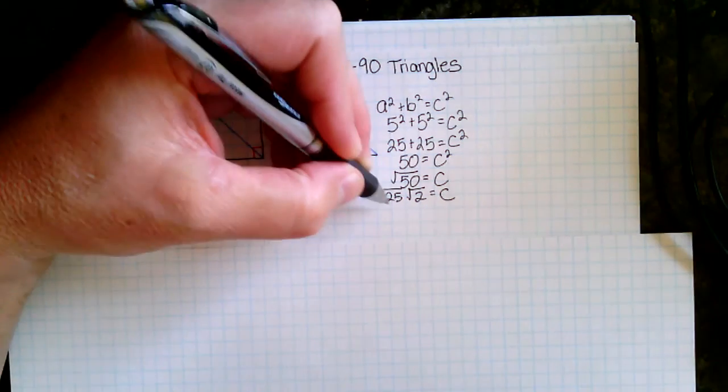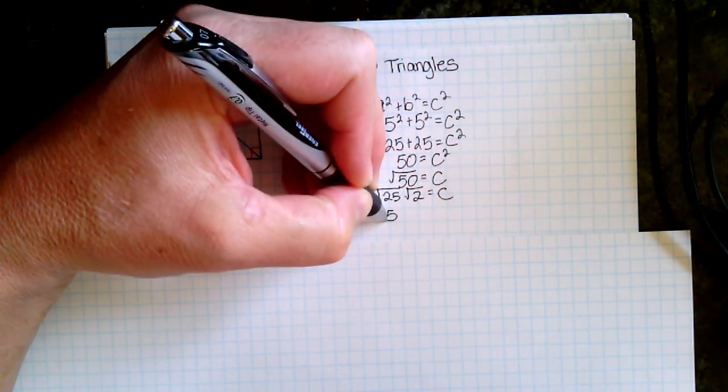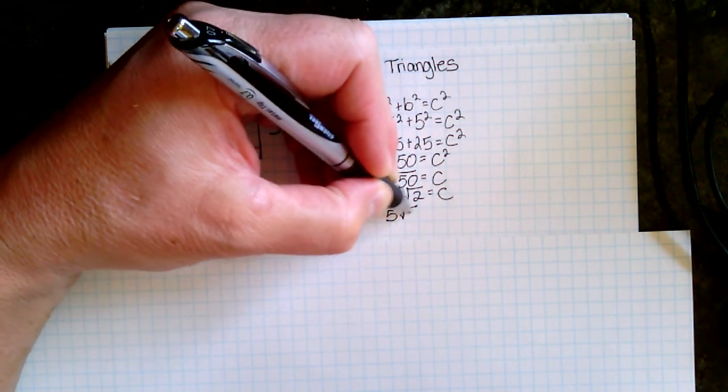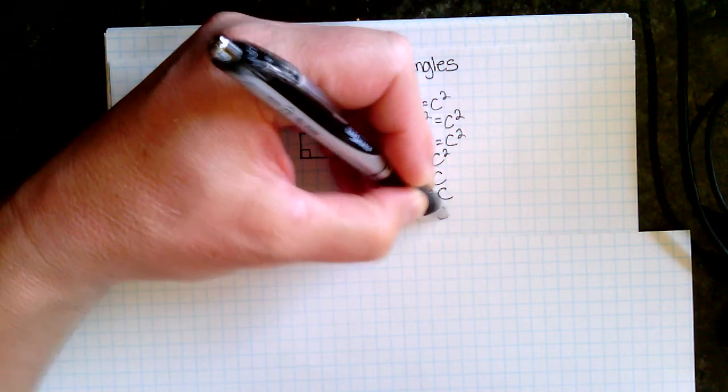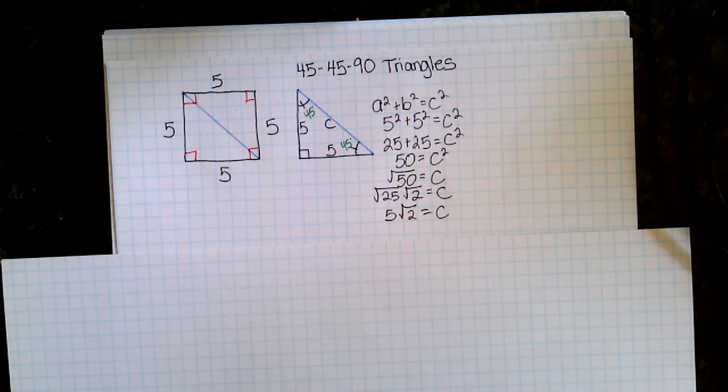And I substitute. 25, the square root of 25 is 5. Root 2 stays right where it is. So C equals 5 root 2.